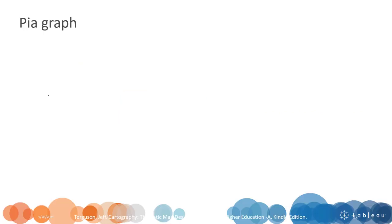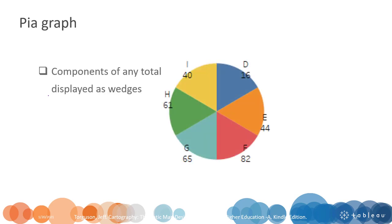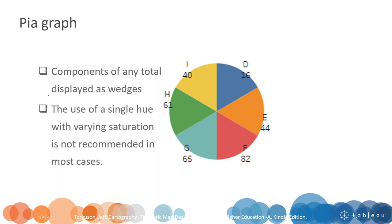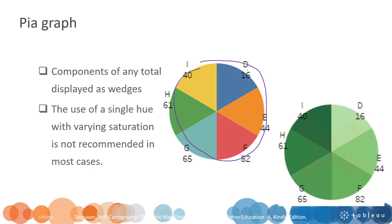Lastly, let's talk about the pie graph. A pie graph uses a pie to compare the components of the total versus the parts. We should use different hues — different types of colors — on the pie chart. Using a single hue with different shades is not recommended. That is rule number one.